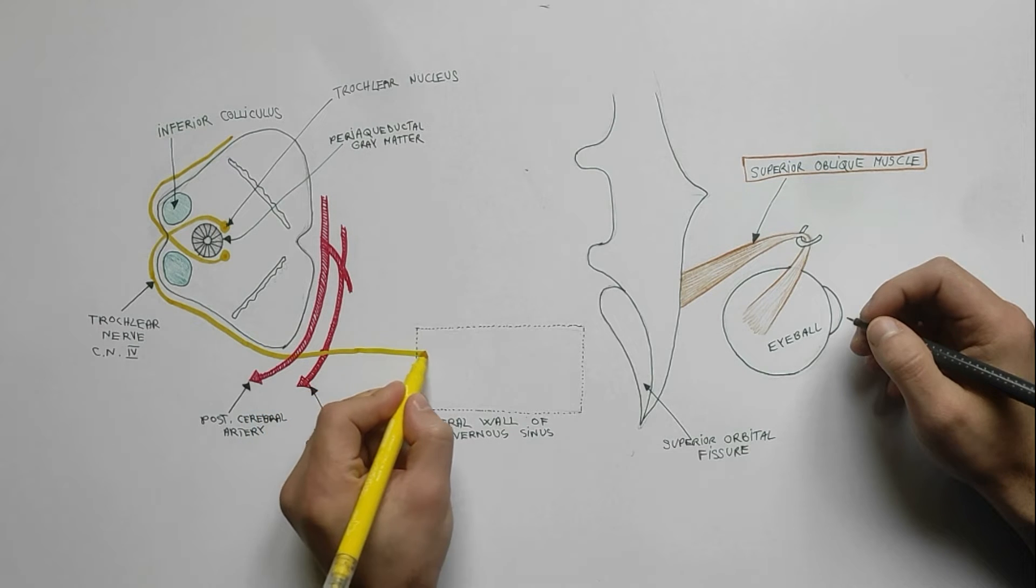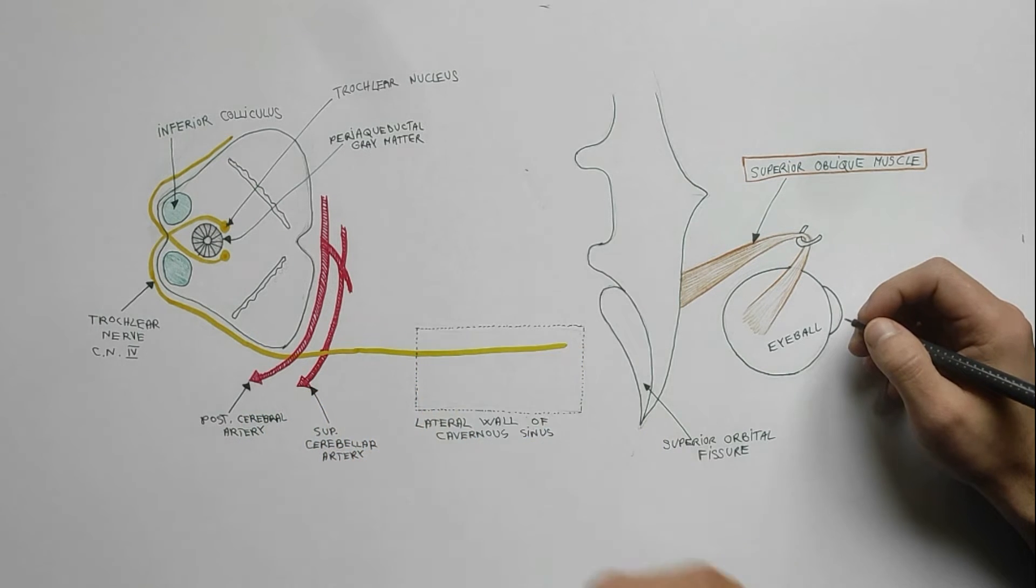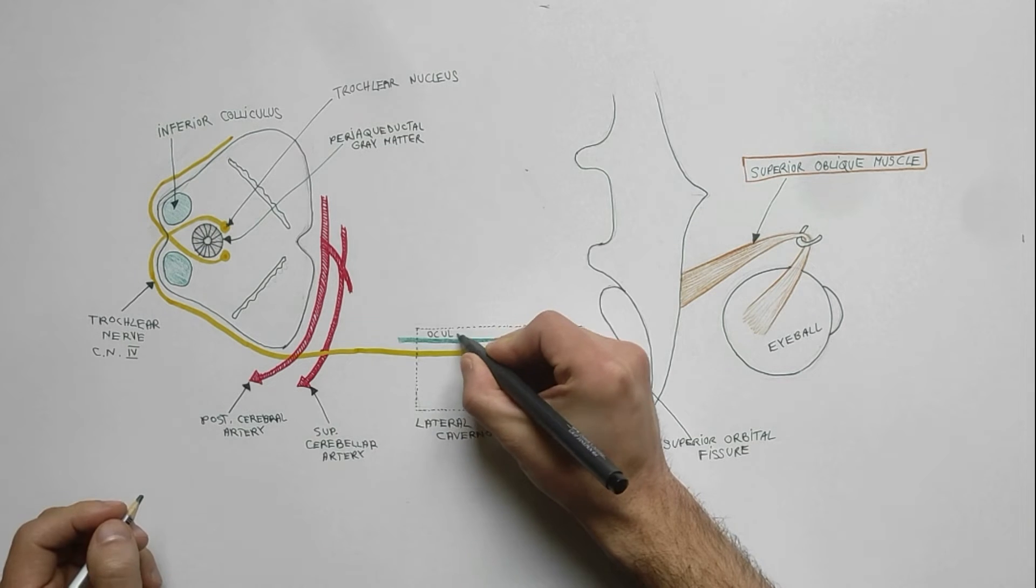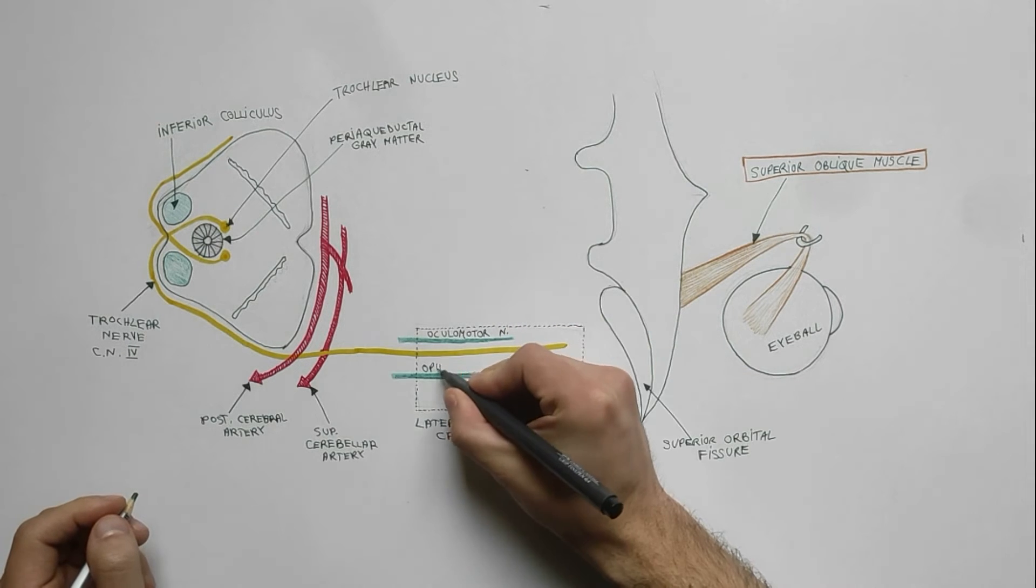The trochlear nerve enters the lateral wall of the cavernous sinus, where it is situated between the oculomotor and ophthalmic nerves.